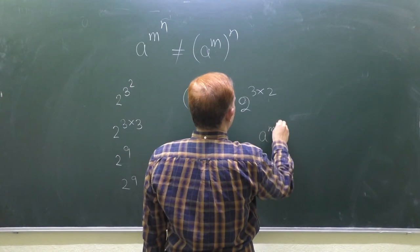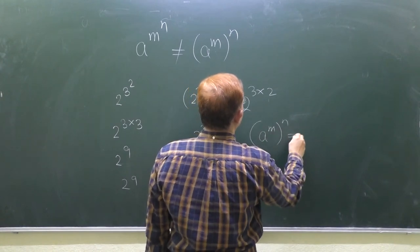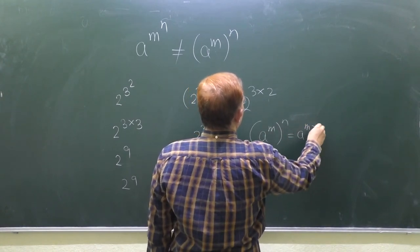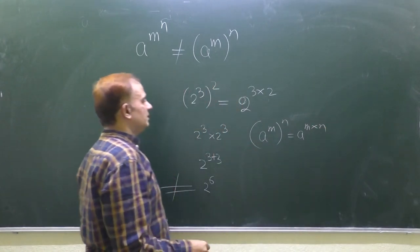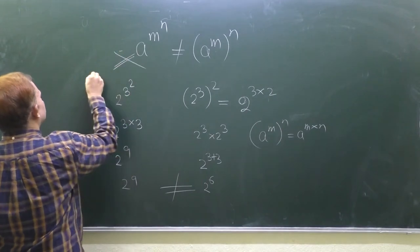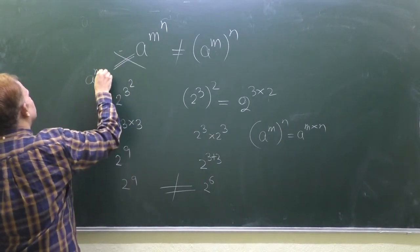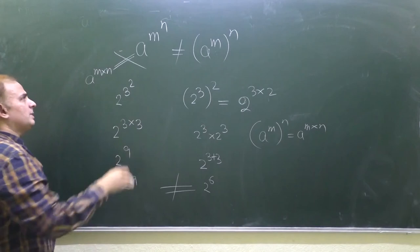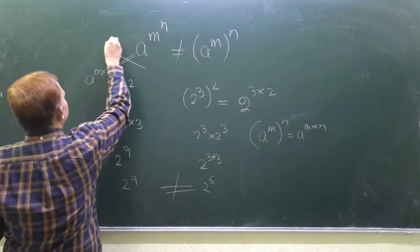a to the power m whole to the power n can be written as a to the power m times n. But this cannot be written as this. This is not a to the power m times n. This is a to the power m to the power n.